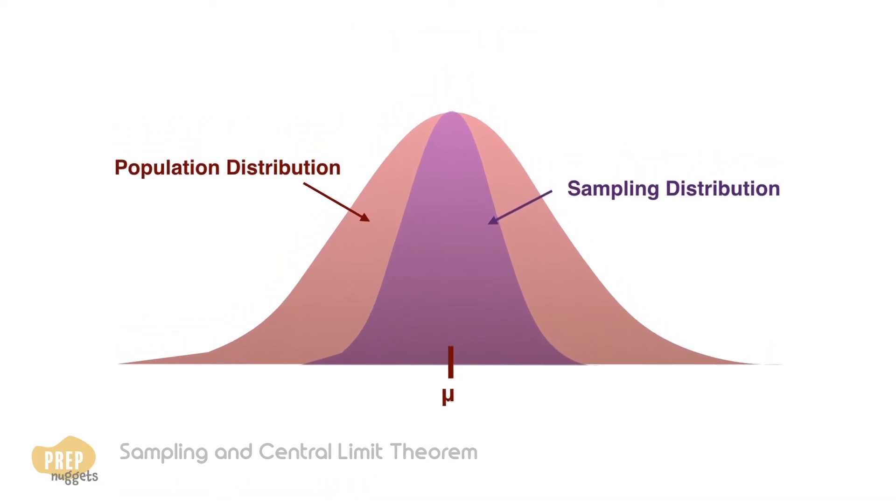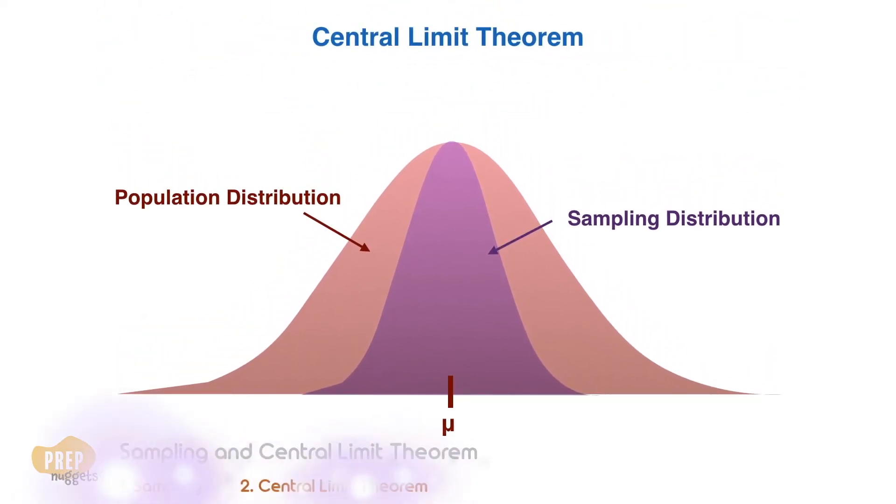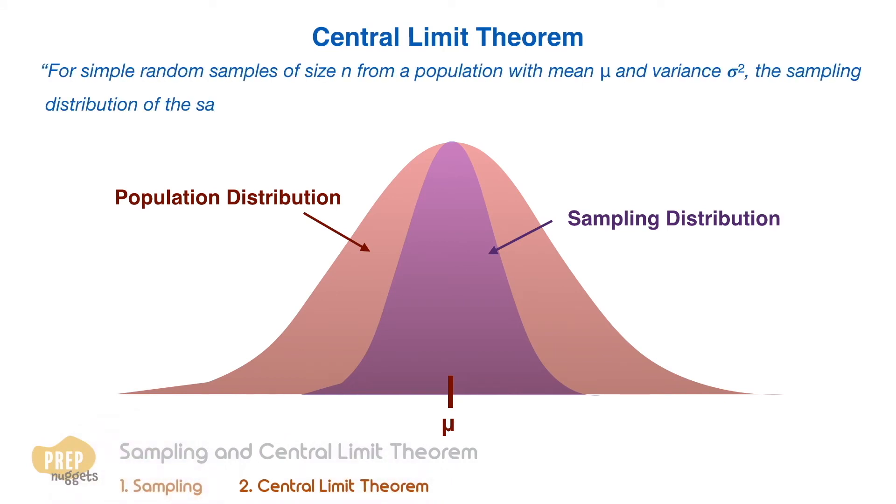This brings us to the central limit theorem. This theorem states that for simple random samples of size n from a population with mean mu and variance sigma square, the sampling distribution of the sample mean approaches a normal distribution, with mean mu and variance sigma square over n.